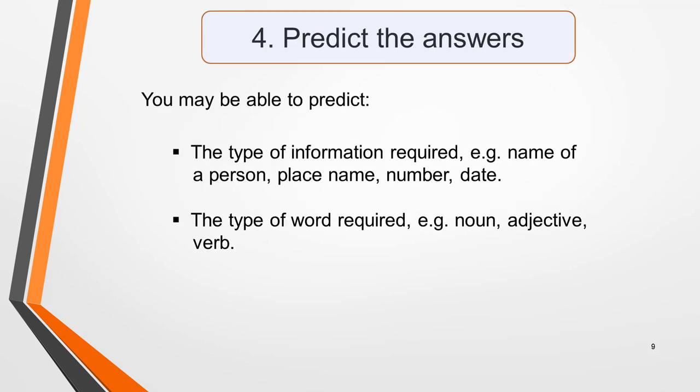The next task is to try to predict what the answers might be. This will focus your mind on what to listen out for in the recording. Occasionally you'll be able to predict the actual word, but mostly it's one or more of these things that you'll be able to determine. The type of information required, for example, the name of a person, a place name, a number or a date. Or the type of word required, such as a noun, an adjective or a verb. Any clues you can get will help you to understand the audio and identify the information needed for the answers.